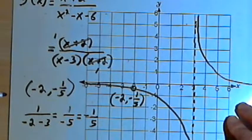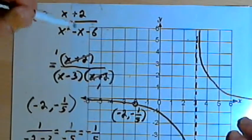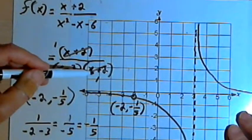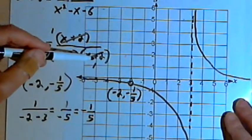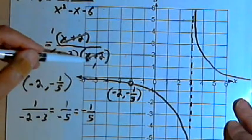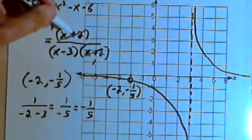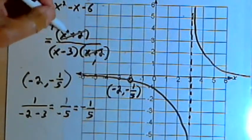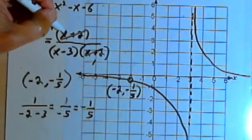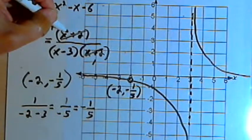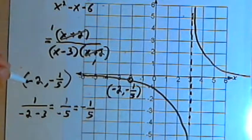So that's basically what we're going to do. We're going to factor the whole thing out, see if there are any common factors. If there's a common factor, that tells us there's going to be a hole in the graph. The hole will occur with a common factor at the x value that makes the common factor equal to zero. In this case it was x equals negative 2.